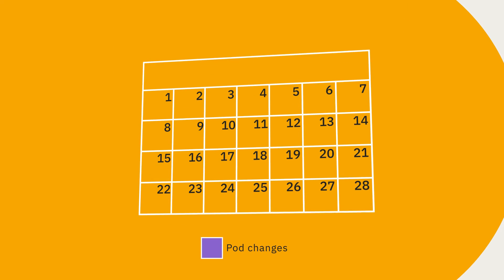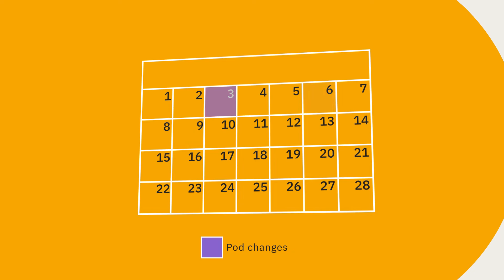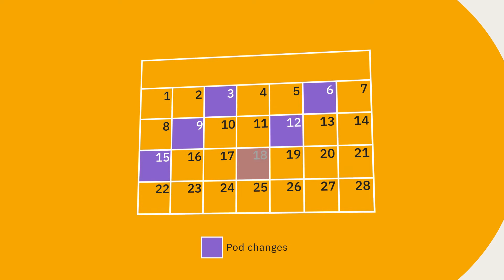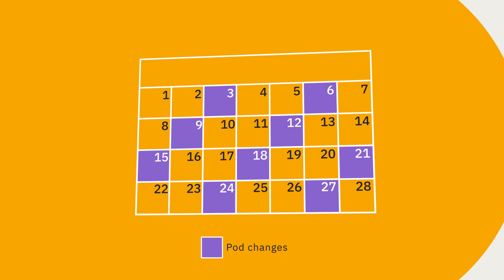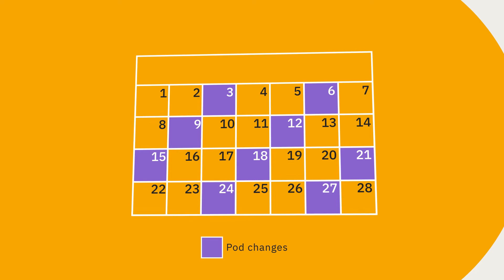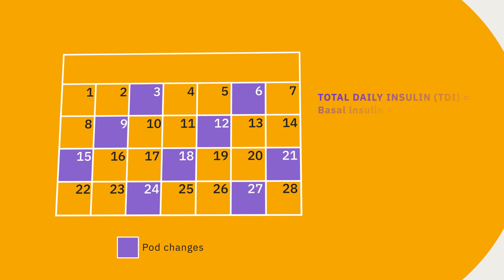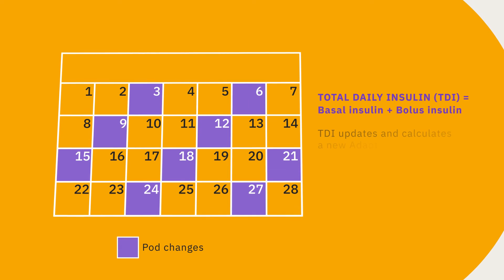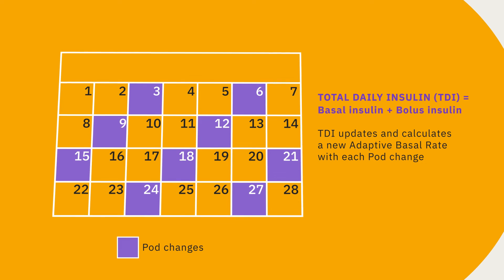Another key feature of the Omnipod 5 system is its ability to adapt insulin delivery to your current needs. It does this by tracking your total daily insulin use. As you use the system, all of your insulin delivery is tracked, taking into account both basal and bolus insulin. With each pod change, the system updates your total daily insulin and, in turn, adjusts your adaptive basal rate, which is your baseline for automated insulin delivery.